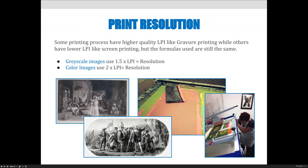So if you have 133 LPI, you'll multiply it times two and you'll need 266 PPI. If you start with 33 LPI, you'd multiply that times two for a color image, and you'd only need 66 pixels per inch.